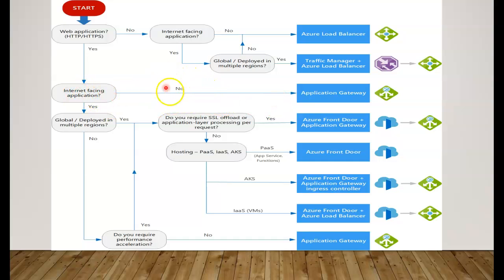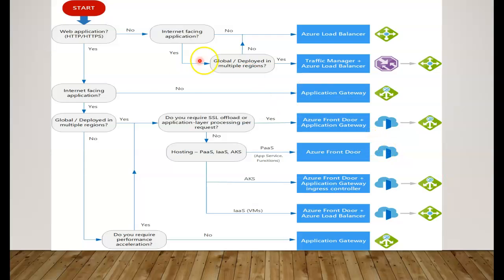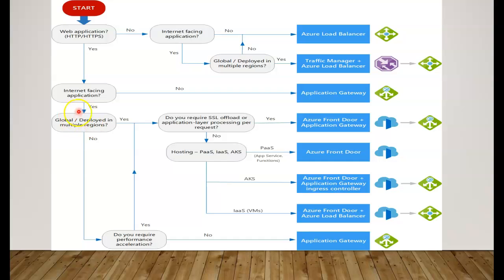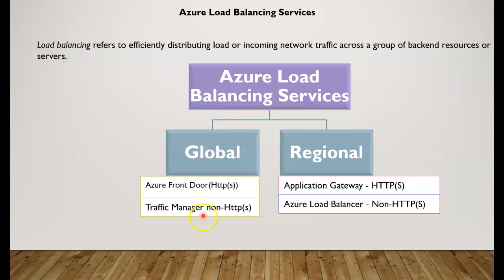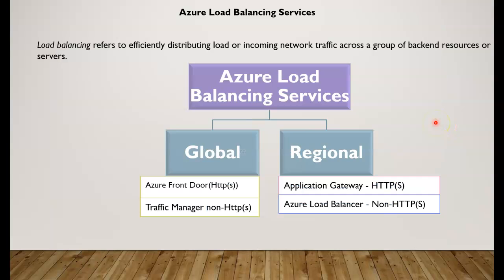For an internet-facing application, you can also go for the Application Gateway model if it is not globally distributed, since it works on HTTP or HTTPS within the region. For a global deployment requiring SSL, you would use Front Door combined with Application Gateway, since Application Gateway handles that kind of routing within the regions.